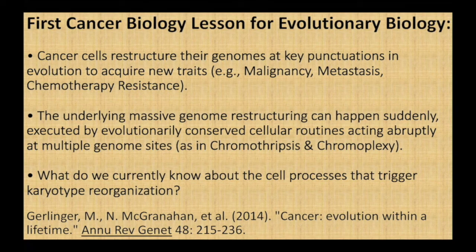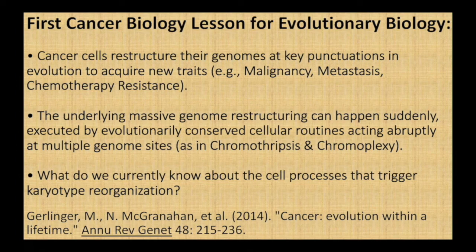This brings us to our first cancer biology lesson for evolutionary biology. Cancer cells restructure their genomes to keep punctuations in evolution, to acquire new traits such as malignancy, metastasis, and chemotherapy resistance. The underlying massive genome restructuring can happen suddenly, executed by evolutionarily conserved cellular routines acting abruptly at multiple genome sites, as in chromothripsis and chromoplexy. What do we currently know about the cell processes that trigger karyotype reorganization? The reference at the bottom is there mostly because of the title, emphasizing that cancer is evolution within a lifetime.